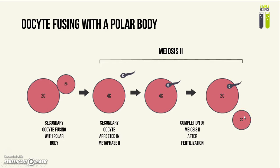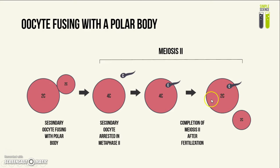However, as you can see, this cell now still has two sets of chromatids, and the polar body also has two sets of chromatids. Normally, they would each have only one set of chromatids. The problem is clear: two sets of chromatids fuse with another set of chromatids from the sperm cell, giving three sets of chromatids — meaning the zygote would be a triploid.